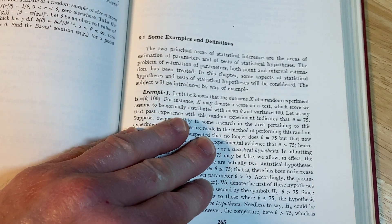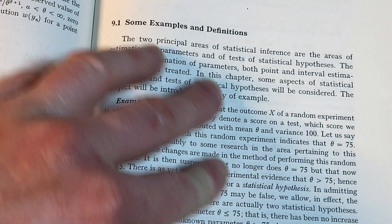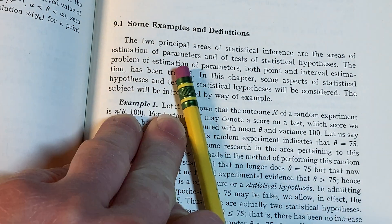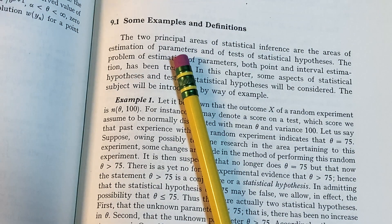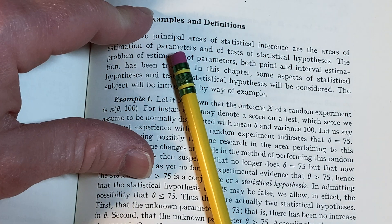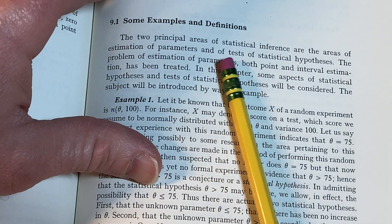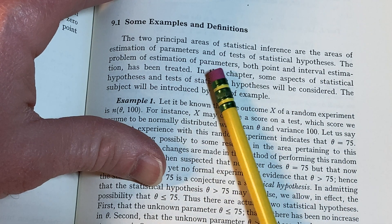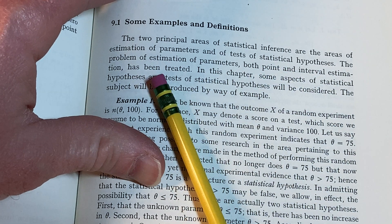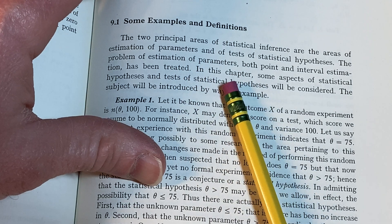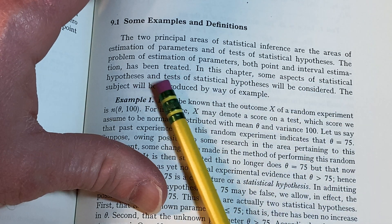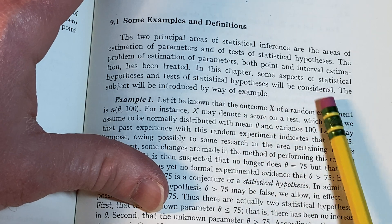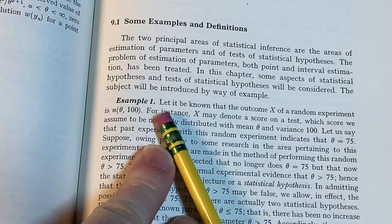Let's read this: Some examples and definitions. The two principal areas of statistical inference, this is important, are the areas of estimation of parameters - like estimating the population mean is an example of a parameter - and tests of statistical hypotheses. The problem of estimation of parameters, both point and interval estimation has been treated. In this chapter, some aspects of statistical hypotheses and tests of statistical hypotheses will be considered. The subject will be introduced by way of example.